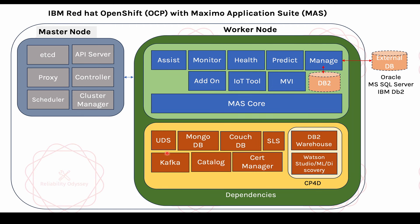The next component is UDS — User Data Services. It tracks user behavior, license consumption, and app points. It also gives IBM the ability to track any specific features if they want.